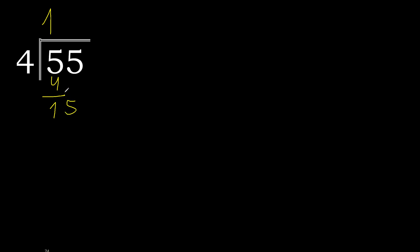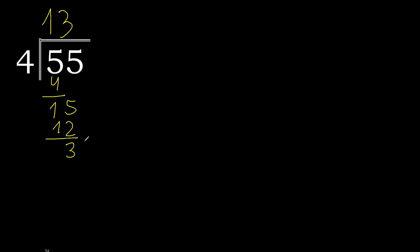Next, bring down: 15. Find which number multiplied by 4 is nearest but not greater than 15. 4 multiplied by 4 is 16 — that's greater. 4 multiplied by 3 is 12. Subtract: 15 minus 12 is 3. There are no more digits, therefore complete.